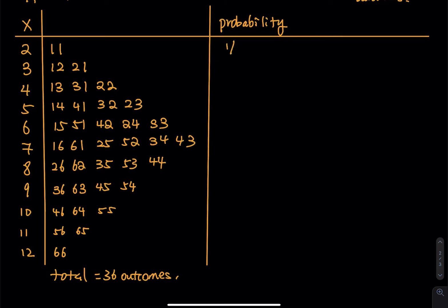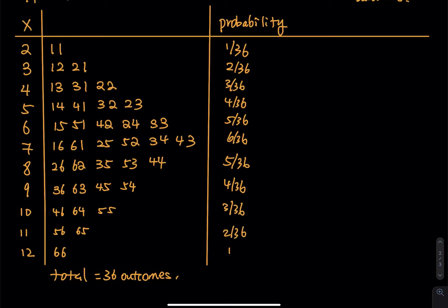So the probabilities go: 1/36, 2/36, 3/36, 4/36 — you don't need to simplify or reduce the fraction, and no decimals. Then 5/36, 6/36, and then back down: 5, 4, 3, 2, 1. The sum equals 36/36 which equals 1, just like the sum of all relative frequencies. If you reduce the fraction you'd have to work with common denominators, so don't reduce and don't use decimals. This section is about probability.